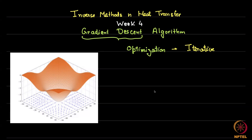The idea here is to give you an introduction to a very simple algorithm, and we will also go to a more complex algorithm later in this week — what is known as the Gauss-Newton algorithm. Even though you will not find gradient descent within most inverse methods books, there are other optimization algorithms within inverse methods.